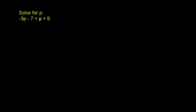A good step toward that is to get rid of this p on the right-hand side. The best way to do that is by subtracting p from the right. But if we want to make sure that this inequality is always going to be true, if we do anything to the right, we also have to do that to the left. So we also have to subtract p from the left.